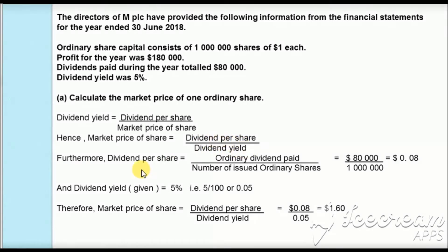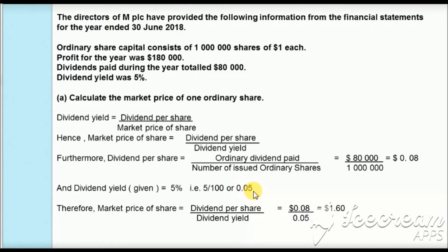Let's first calculate the dividend per share. The total dividend is $80,000 and the number of ordinary shares issued are 1 million. So dividend per share equals $80,000 divided by 1 million, which equals $0.08. Dividend yield is given as 5%, or 0.05. Therefore, the market price of one ordinary share equals $0.08 divided by 0.05, giving a value of $1.60.